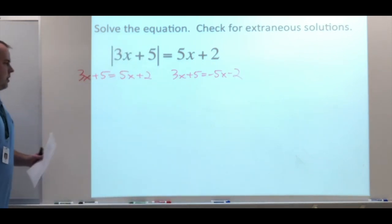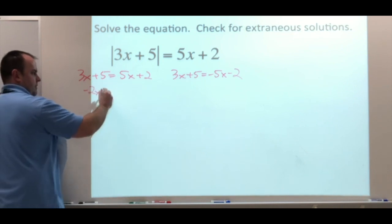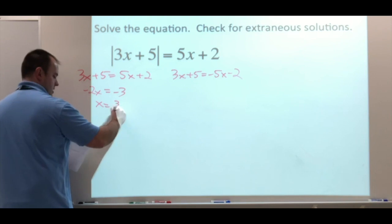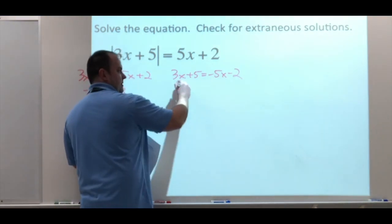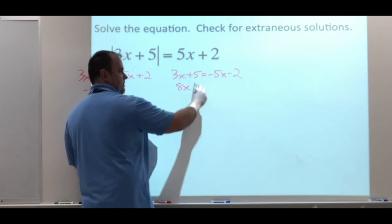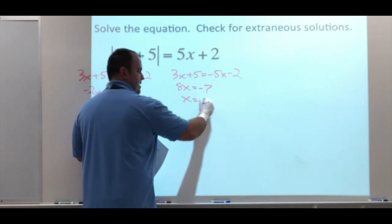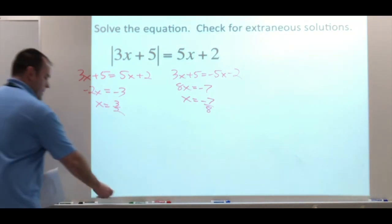Going through our work, subtracting our 5, subtracting our 5x, subtracting our 5 gives us negative 3, x equals 3 over 2 for our one solution. Bringing the 5 over gives us 8x, subtracting the 5 from 5 gives us negative 7, we're at negative 7 over 8 for this one. So there's our two solutions. Fractions, I know, we will have to deal with them.